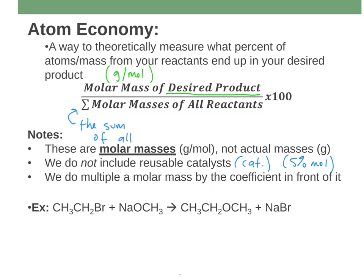We are going to multiply the molar mass by a coefficient if there's one in front of it. For example, if you had iron reacting with oxygen to make iron(III) oxide — say the coefficients are 4 Fe, 3 O2, 2 Fe2O3 — you would take the molar mass of iron (55.845) and multiply it by 4, take the molar mass of O2 (about 32) and multiply by 3, and so on. If you have coefficients in your equation, you need to multiply the molar masses by them. This particular equation shown doesn't have coefficients, so I don't need to worry about that here.